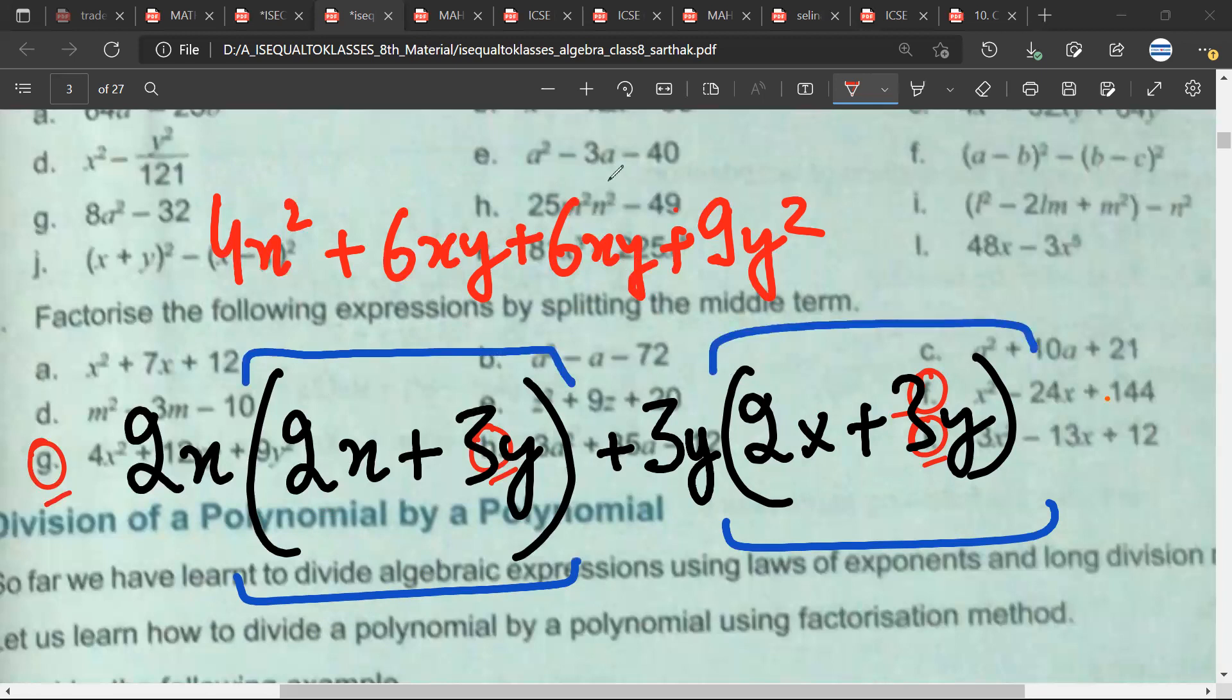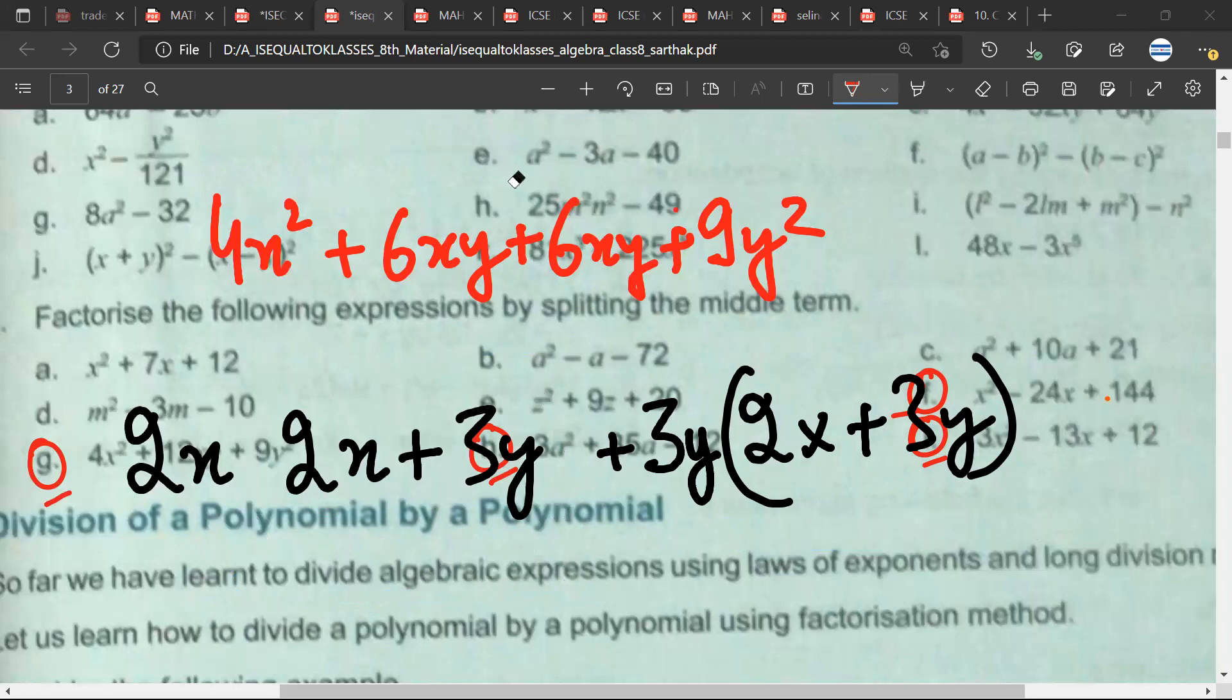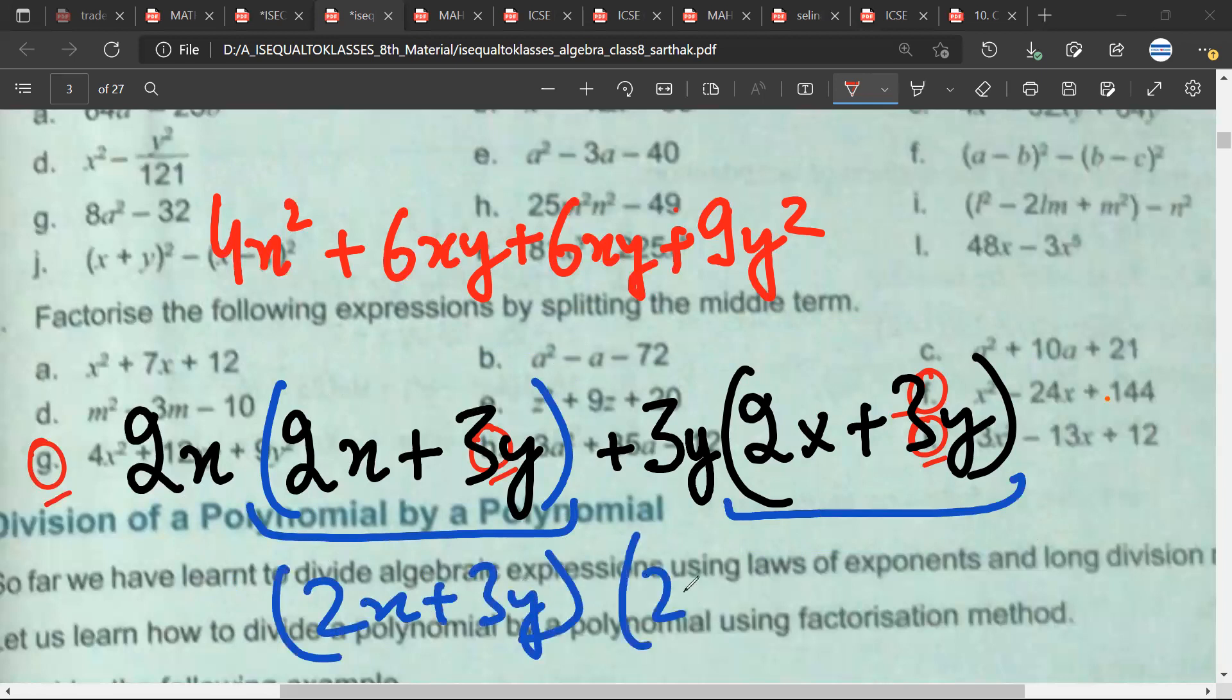This will always be the common factor. If this term 2x + 3y, when you try to write it here and it doesn't make any sense, then you have done some mistake. But if you are on the right track, 2x + 3y would always come common. And I am left with the 2x + 3y, Mr. Sartak. Is it making sense? Yes. And this can be written as 2x + 3y whole square.